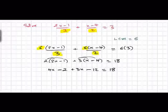In the next line, we continue tidying up, and we simply put x's with x's and numbers with numbers. So 4x plus 3x is going to give me 7x. And minus 2 minus 12 gives me minus 14. So, 7x minus 14 equals 18.